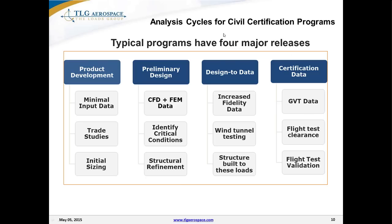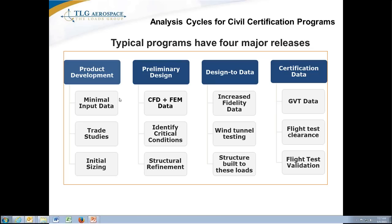There are typically about four major analysis cycles for civil programs, codified here in North America with four names — sometimes just numbered loop one through four. At the product development level, you're doing rapid trades, making overall design decisions, understanding basic trends, and doing initial sizing. You need something that doesn't take a lot of input data, runs quickly, gives basic trends and overall ideas. The trade-off is not having a lot of detailed data and not spending a lot of time on configurations you might not even carry forward.